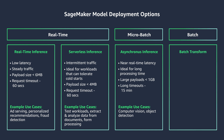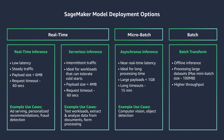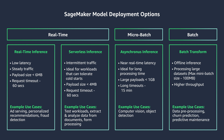Your final option is SageMaker batch transform. It's available for offline processing when you have large amounts of data and do not need a persistent endpoint. Typically it is used for pre-processing datasets. Compared to all the other options discussed, this has the highest throughput available. It can support large datasets that are gigabytes in size and processing times up to days. Some examples are data pre-processing, churn prediction, and predictive maintenance.